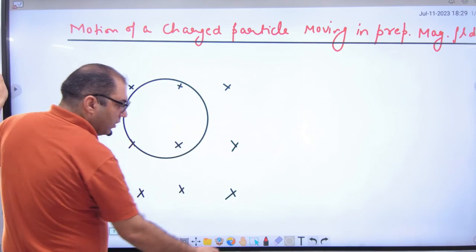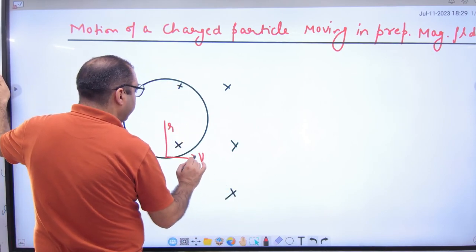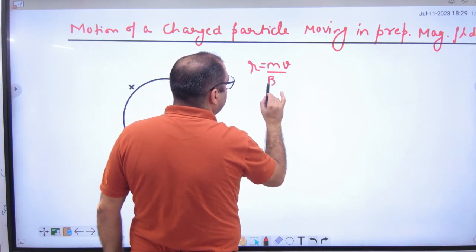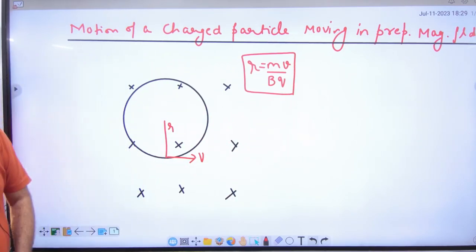In this circle, what is the value of the radius? R is equal to m times velocity divided by bq. Is this point clear? R is mv by bq, clear?